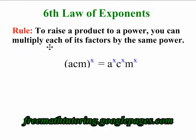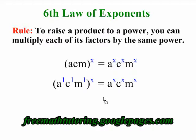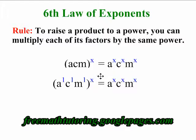How is this multiplying? Well, maybe it makes it more clear if we look at it like this. acm is the same as a to the 1, c to the 1, m to the 1. So what we're doing is we are multiplying each of those exponents by x — 1 times x is x — which explains how we end up with a to the x, c to the x, m to the x.